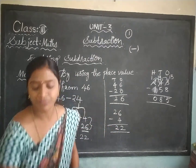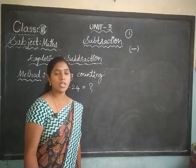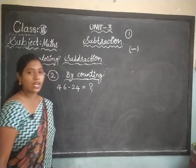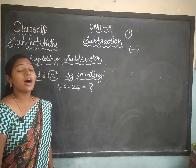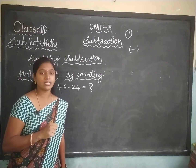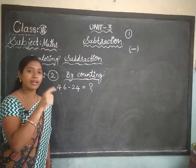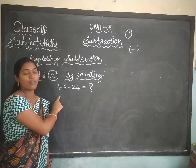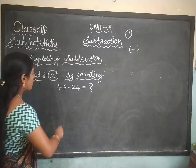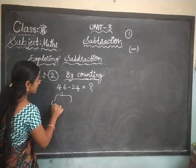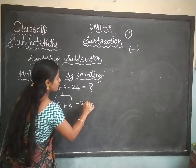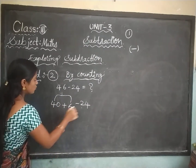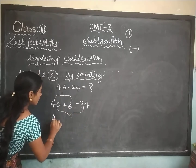Now let us do Method 2: by counting. I am taking the same example, 46 minus 24. In Method 1 you were breaking the second number; in Method 2 by counting, you have to break the first number. The first number is 46. So 46 means 40 plus 6, minus 24 as it is. Now you have to subtract 40 minus 24 first.